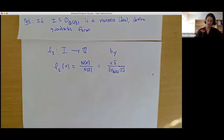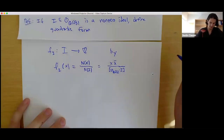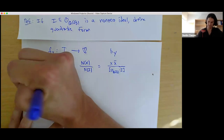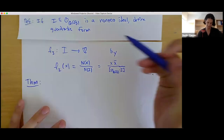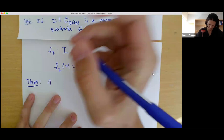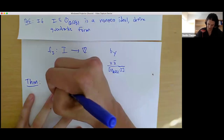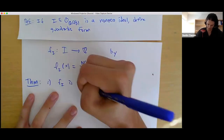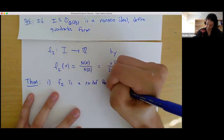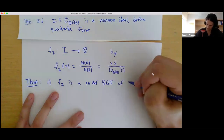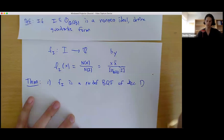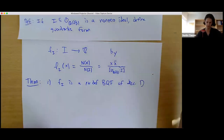We call f sub I the map from I to the integers by f sub I of any element x equal to the norm of x — that is, x times its conjugate — divided by the norm of the ideal. The norm of the ideal is the same as the index of the ideal inside the ring of integers, which is always finite when I is a non-zero ideal. The theorem says that f sub I is a positive definite binary quadratic form of discriminant D.